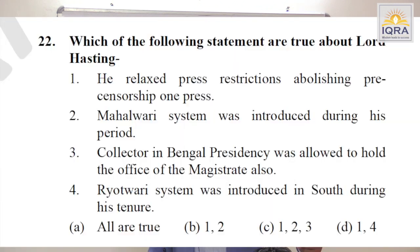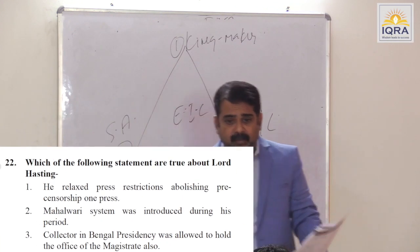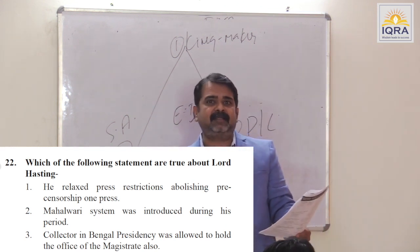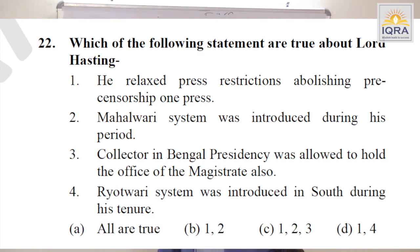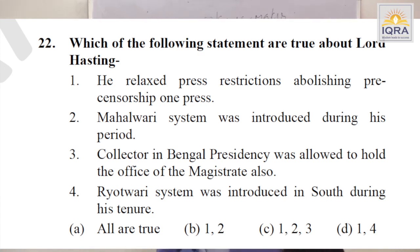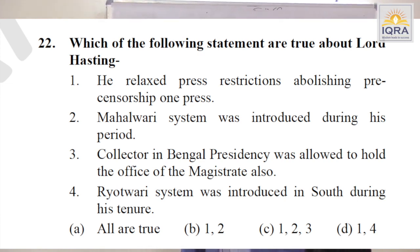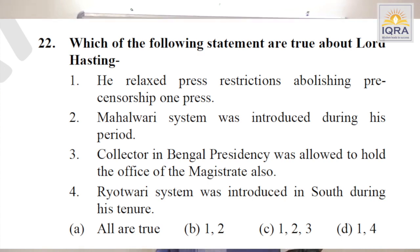What was true about Lord Hastings — creator? He relaxed press restrictions, abolishing press censorship — true. Mahalwari system was introduced during his period — true. Collectorate in Bengal Presidency was allowed to hold the office of magistrate also — a reform in the Cornwallis setup. Ryotwari system was introduced in South during his tenure — true. All are true. Answer is A.